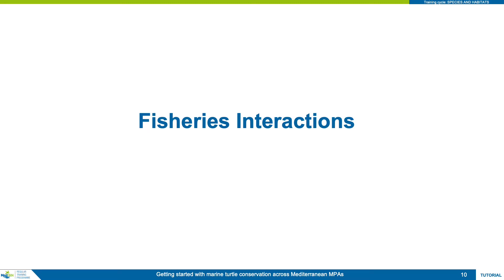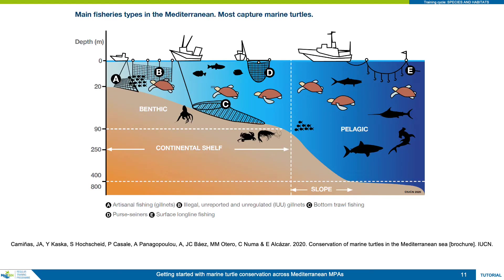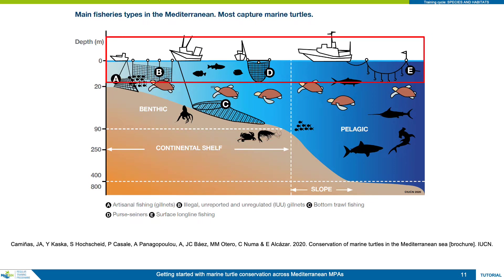The first threat we will look at, and the one highlighted as the most important one facing marine turtles today, is interactions with fisheries, mainly fisheries bycatch. Fishing activity can be divided by gear type and location of deployment. Fishing in shallower waters often takes place on the seabed — these are benthic fisheries — and those active in often deeper waters not extracting resources from the seabed are pelagic fisheries.